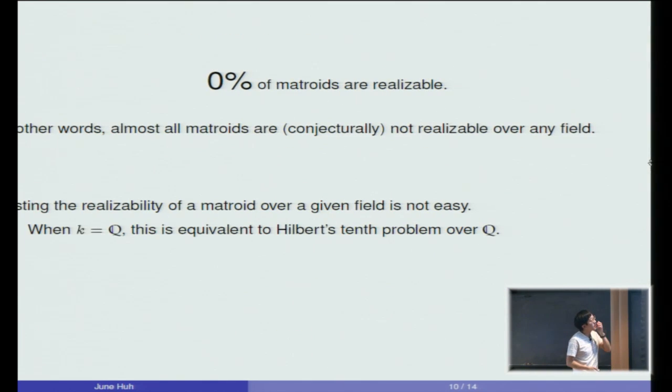So how many matroids are realizable over a field? And the answer is that 0% of matroids are realizable over some field. If you enumerate the class of all matroids and count how many of them are realizable over a field, then asymptotically they go to zero. Also, testing the realizability of a matroid over a given field is rather difficult. For example, when the base field k equals Q, it's known that this is the same as asking the answer to the Hilbert-Pence problem over Q. So there are many, many matroids which do not arise over a field.